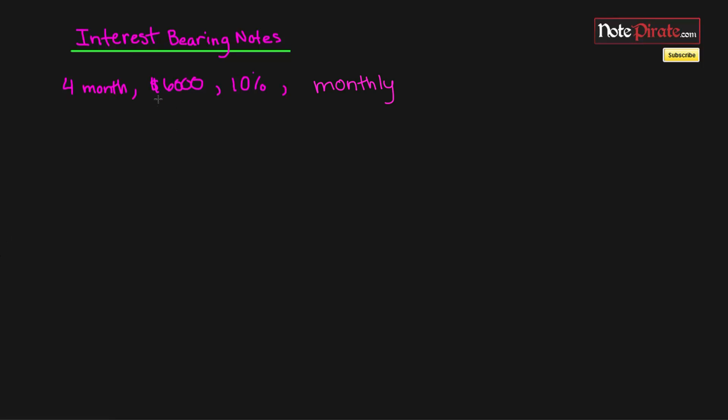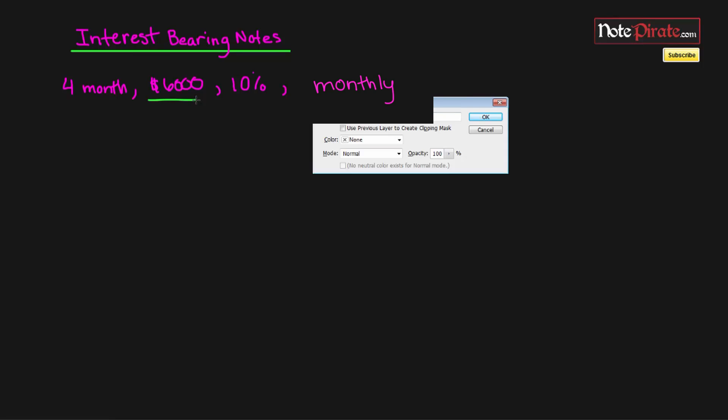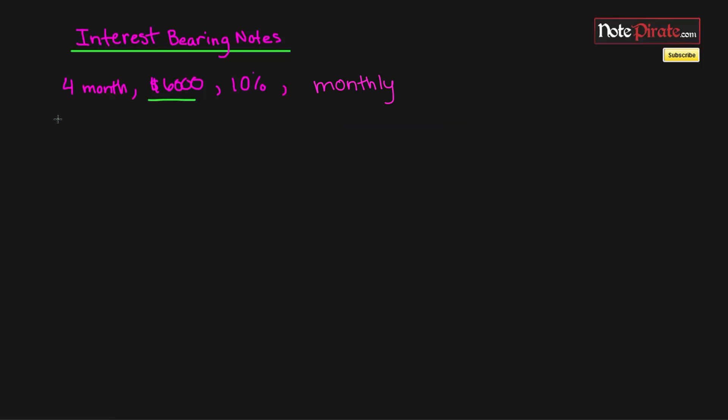Let's draw a timeline to illustrate what we're going through. I'm going to have four months: one, two, three, and four, and we're going to be receiving the interest periodically throughout this. You can tell this is an interest-bearing note because there is periodic interest.